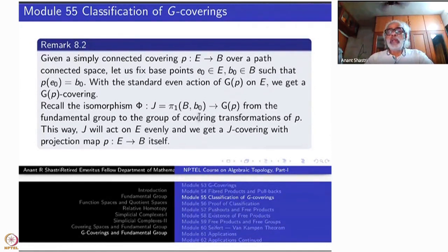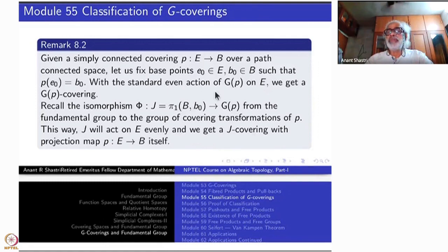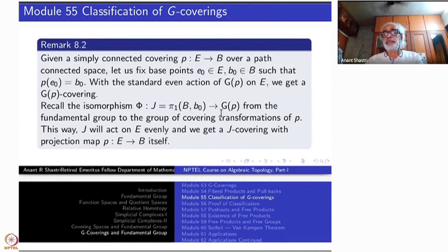Starting with a loop at B0, lift it to a path in E at the point E0, and look at the endpoint. The endpoint is in the same fiber. Therefore there is a unique covering transformation — an element of G — which takes E0 to the endpoint of this path. The class of ω is sent to that covering transformation, and this assignment is an isomorphism, as we have proved earlier.